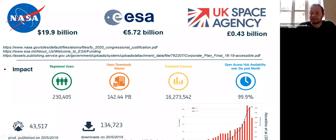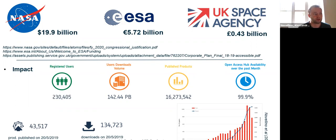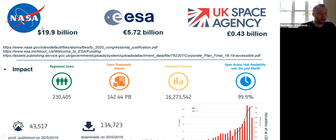However, the budgets shown include all programs including extraterrestrial exploration. If we consider just the Earth Observation program, the numbers are quite similar — ESA and NASA invest approximately the same amount of money. We are talking about probably around one billion of ESA's budget dedicated to Earth Observation, which is the same amount dedicated by NASA for the same purpose. So we are working with one of the best Earth Observation programs in the world, if not the best.